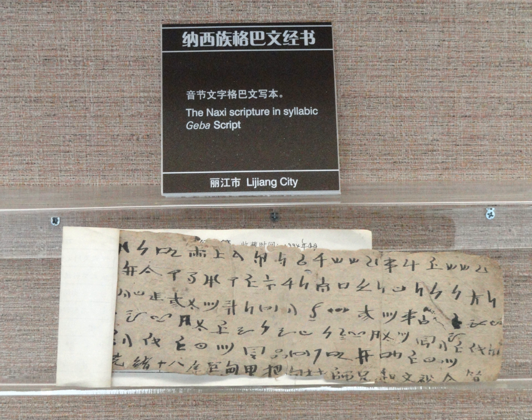Geba is a syllabic script for the Nashi language. It is called GGO Ba in Nashi, adapted as Geba, and Gae Ba in Chinese. Some glyphs resemble the Yi script, and some appear to be adaptations of Chinese characters.